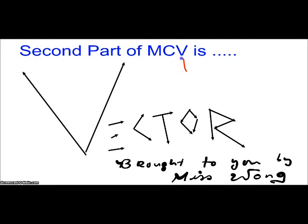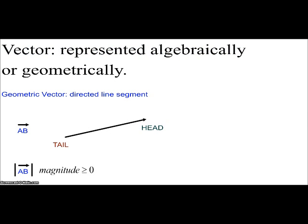Today we're going to start the vectors portion of the MCV course, which is chapter 6 in the online text. So what is a vector? There's two ways you can represent a vector. One's an algebraic way, which we will do later. But today we're just focusing on geometric, basically what it looks like.